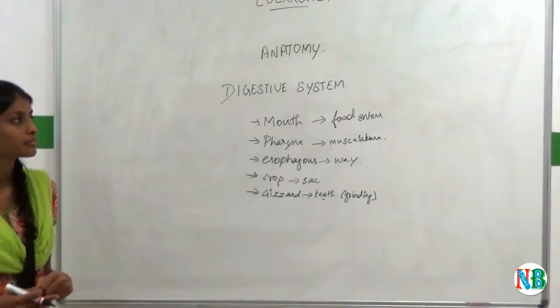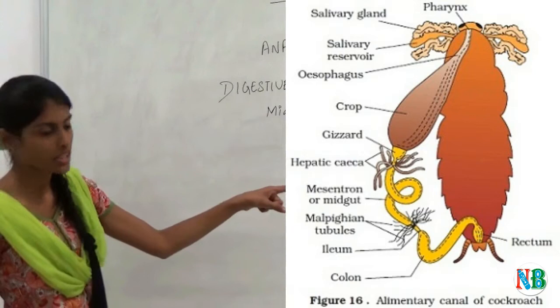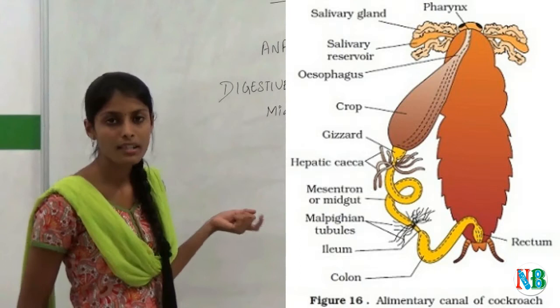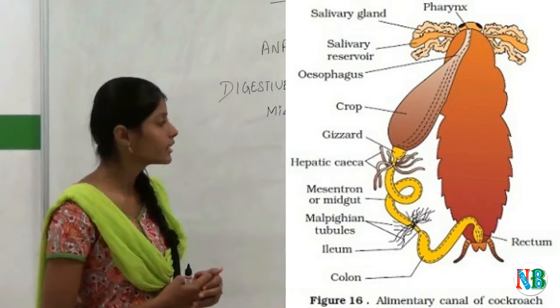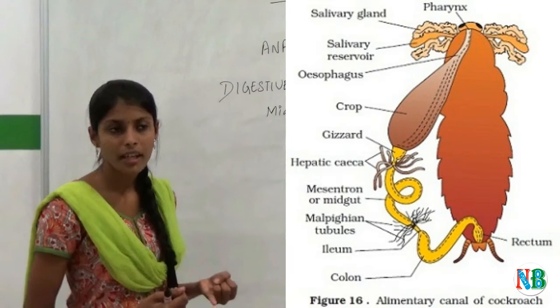Now we will see about the Midgut. In this image, you can see some finger-like projections. They are helpful in secreting digestive juices and Midgut is a site for digestion and absorption. So Midgut is also called as mesenteron. And the Midgut is covered by peritrophic membrane that protects the wall of the Midgut from hard particles of the food. And the Midgut is lined by glandular epithelium. So these cells can produce enzymes or digestive juices.